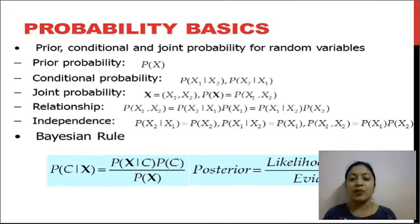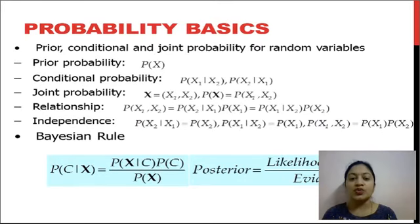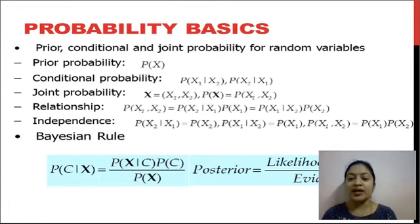In the case of joint probability, we have the probability of two variables X1 and X2, which is the probability of the total vector X1 and X2. The relationship between conditional and joint probability is: P(x1, x2) = P(x2 | x1) * P(x1), or P(x1 | x2) * P(x2). So joint probability equals the conditional probability multiplied by the prior probability. For independent variables, P(x1 | x2) = P(x1), and so on.